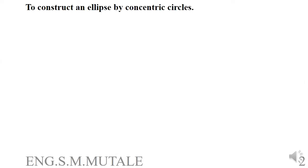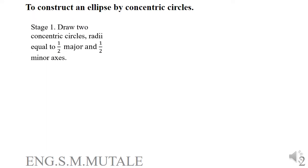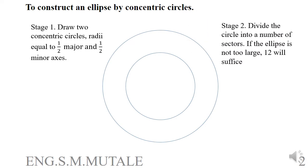To construct an ellipse by concentric circles, step one: draw concentric circles with radius equal to half the major axis and half the minor axis. You will be given the length of the major and minor axes, so you take half of each and draw the corresponding circles — one with radius equal to half the major axis, and one with radius equal to half the minor axis.